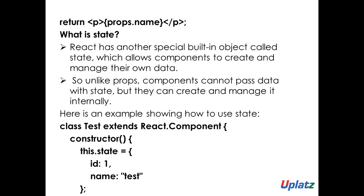Next, what is state? React has another special built-in object called state. It allows the component to create and manage its own data. Unlike props, a component cannot pass data to a child using state — but it can create and manage it. Props flow data from parent to child, whereas state creates data in the same component and manages it there.